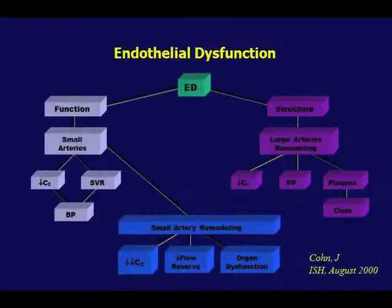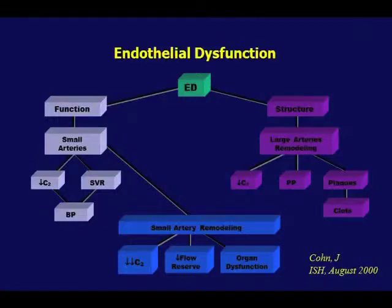Here's the way this works. You start out with endothelial dysfunction and the first marker is a functional problem in the small arteries, leading to decreased compliance — stiffness in the very tiny arteries in the periphery. One of the early responses is an increase in blood pressure, which is a marker for small vessel dysfunction.